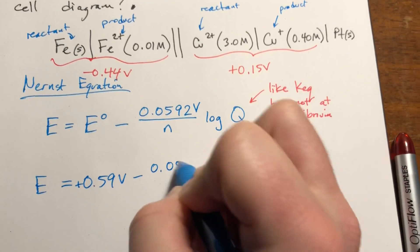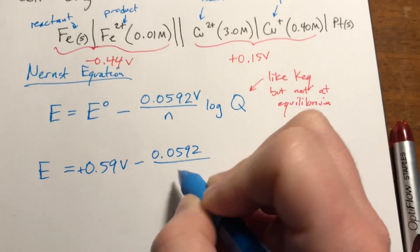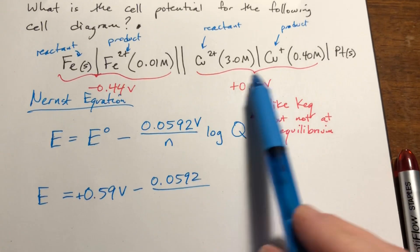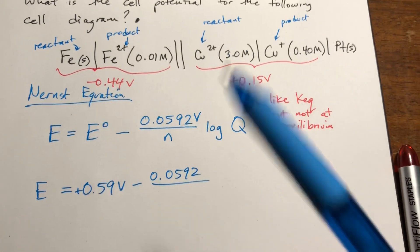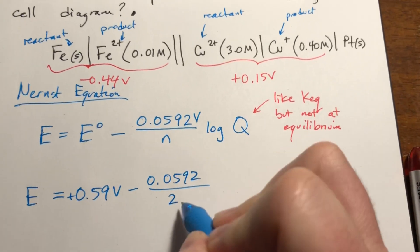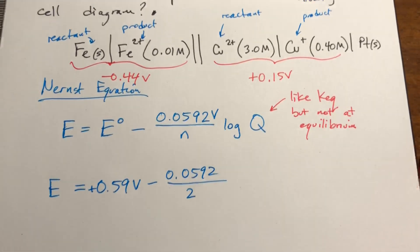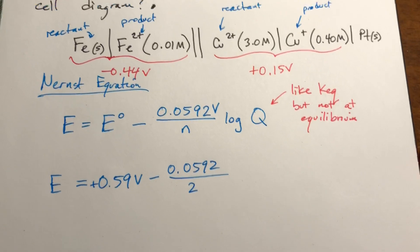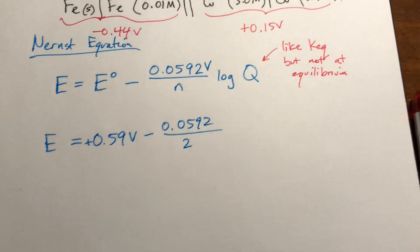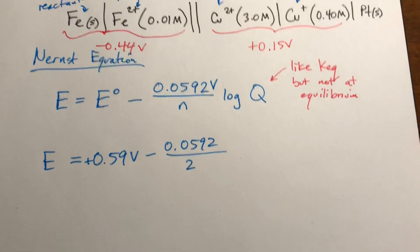Minus 0.0592 divided by N. If you looked on the equations on the reduction potential table, this has one electron being transferred, this has two, so N is going to be 2. It's not 2 every time, like in the previous problem it was 2 and it's 2 now. It's just coincidence that these happen to both be 2, okay?